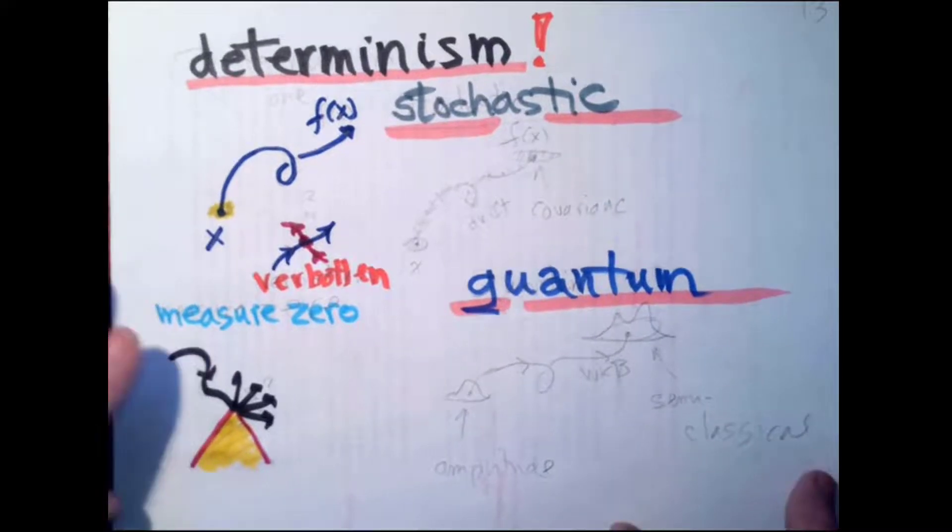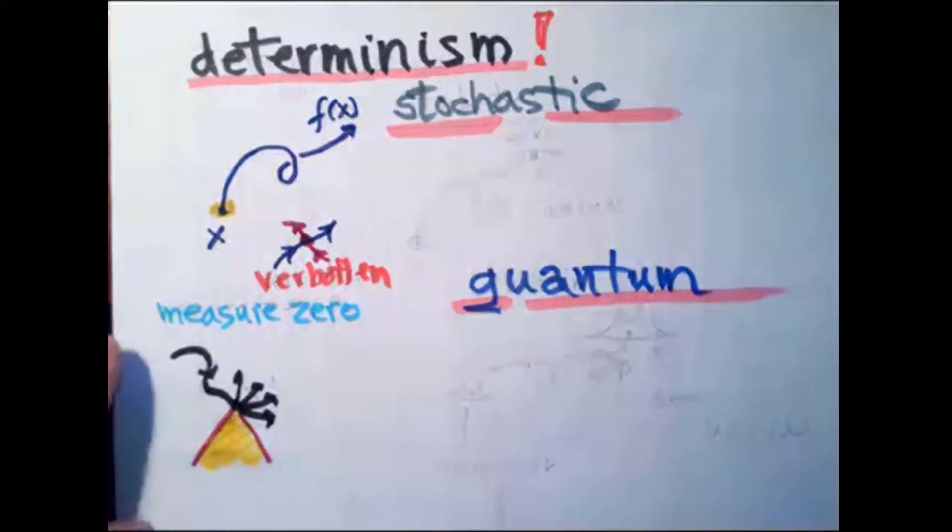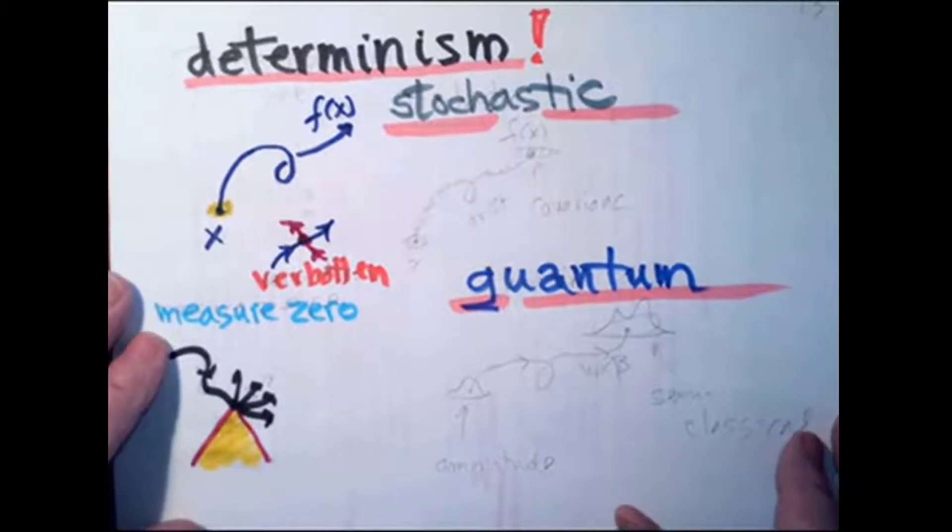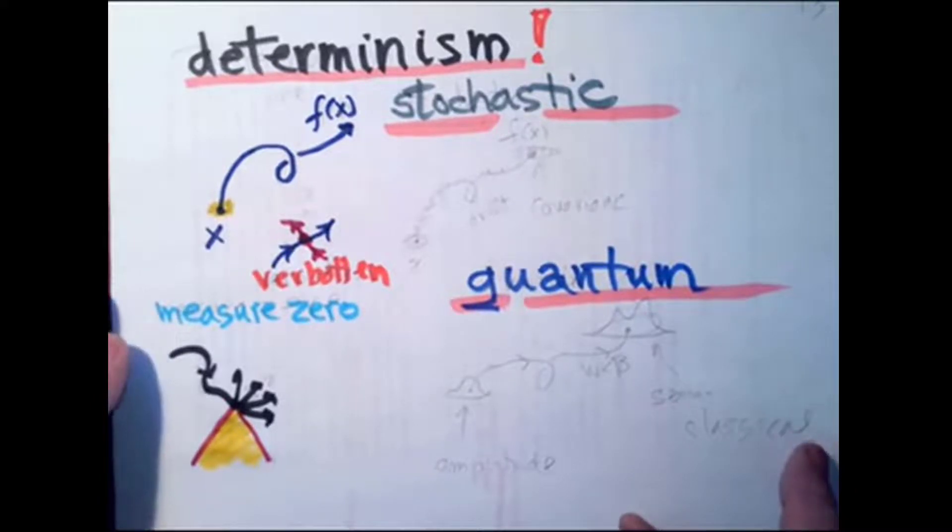So sets of measure zero are small. For example, they'll find fixed points and periodic orbits, which are sets of measures zero in the world of all possible things, very important. They'll help us organize things.